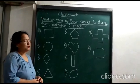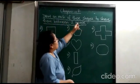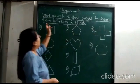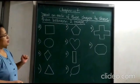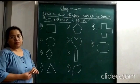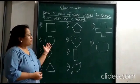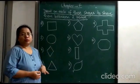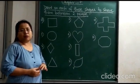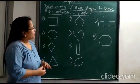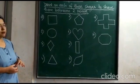Next assignment: draw a line on each of the shapes to share them between two people. This means you have to divide each picture into two equal parts by drawing a line. You are given ten pictures for your assignment.